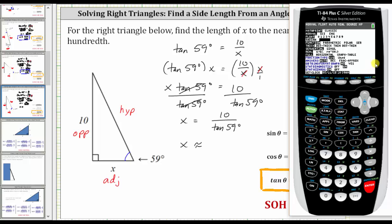Now to go back to the home screen, we press second mode for quit. We enter 10 divided by tangent 59, close parenthesis, and enter.